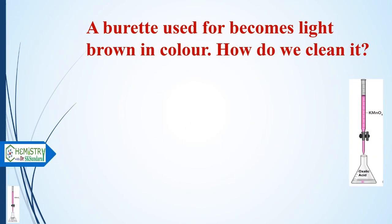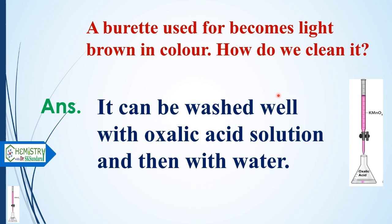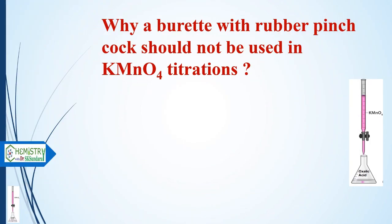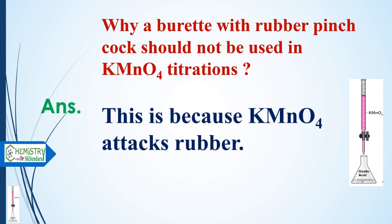If a burette used for KMnO4 becomes light brown in color, how do we clean it? It can be washed with oxalic acid solution and then with water to remove the brown color. Also, why should a burette with a rubber stopcock not be used in permanganometric titrations? This is because KMnO4 attacks rubber, so a rubber stopcock should not be used.